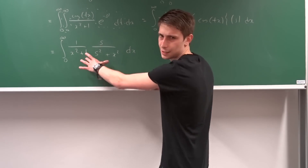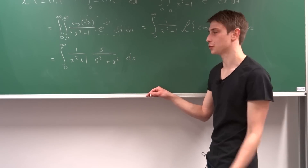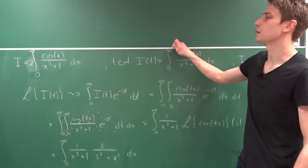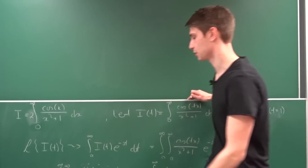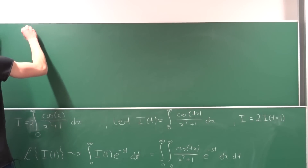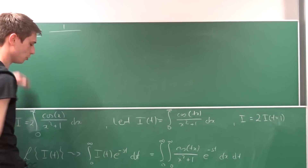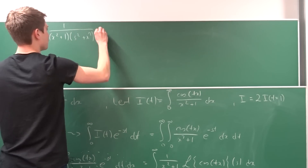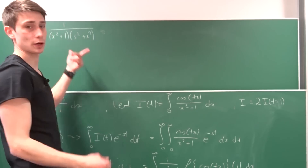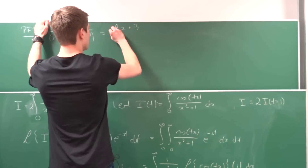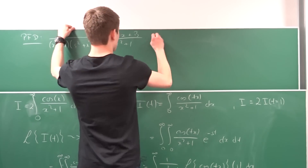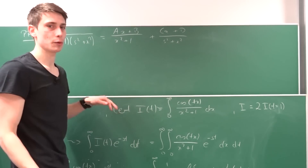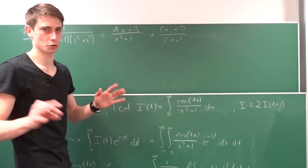We can't easily integrate this right now because we have a product of two fractions in terms of x, so we need to do partial fraction decomposition. That's going to be the longer part of the video, but it's going to be quite easy. So we have 1 over (x squared plus 1)(s squared plus x squared) equal to (ax plus b) over (x squared plus 1) plus (cx plus d) over (s squared plus x squared). We multiply both sides by the big denominator.